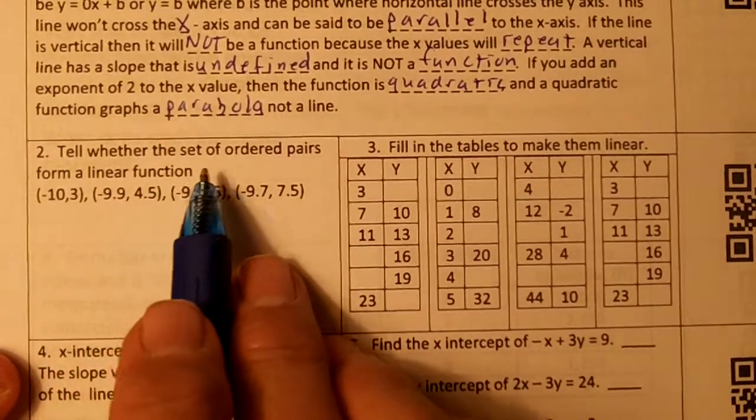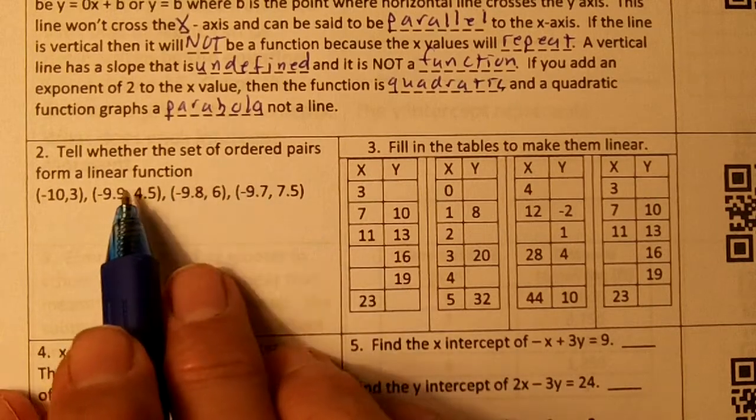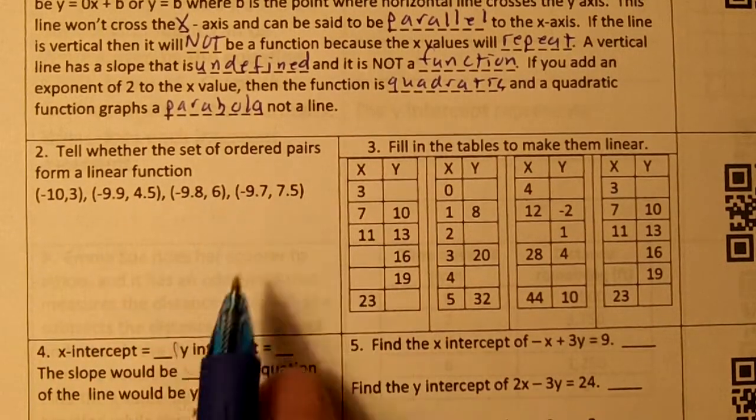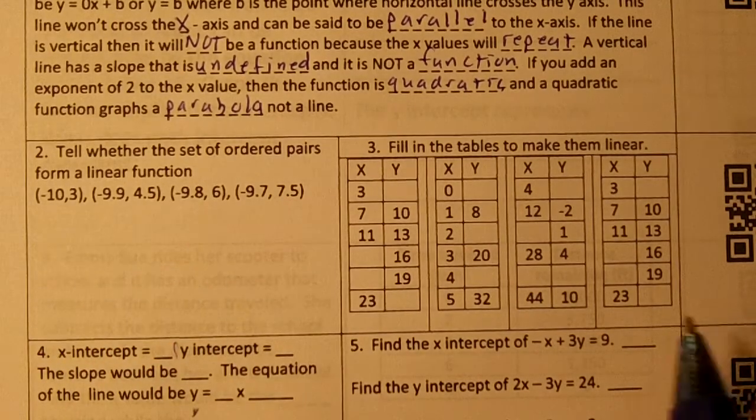Problem 2. Tell whether the set of ordered pairs form a linear function. To do this, we need to make a t-chart and make sure the x and y values have a constant rate of change.